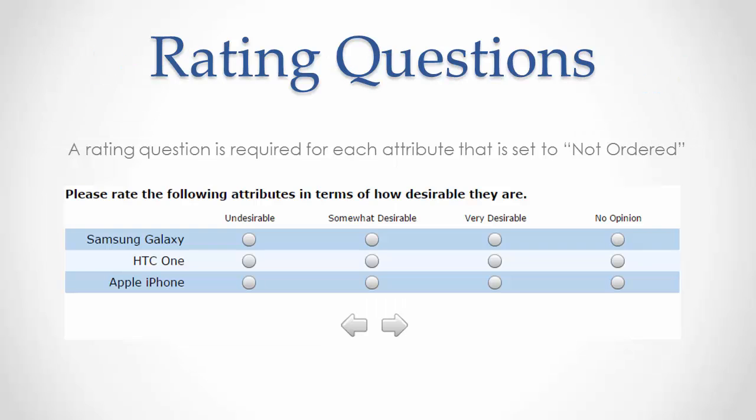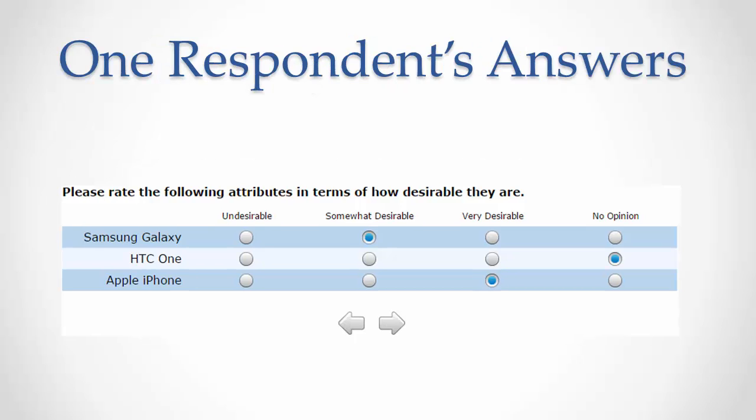The software will insert ratings questions for any attribute that's not ordered. Once respondents tell us their preference order, this does two things for us. Number one, it allows the software to avoid showing obvious tradeoffs, competing products within the same conjoint question where one is clearly superior on all its aspects to the other. And two, it gives the software the information so that when it computes the preference scores for each respondent, it can constrain the solution so that preferred levels always have higher scores than less preferred levels.